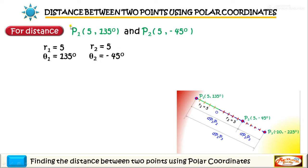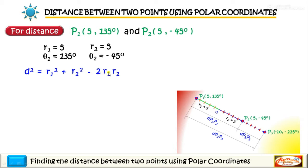Plugging in the given coordinates in this formula, so we have D squared is equal to R1 squared plus R2 squared minus twice the product of R1 and R2 multiplied by cosine of theta 2 minus theta 1.